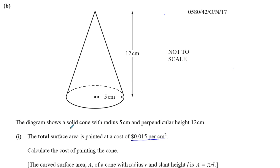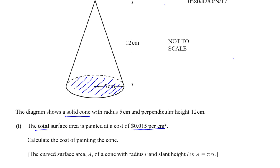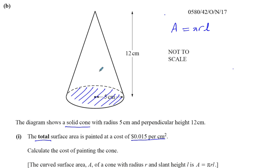It's a solid cone, and it says the total surface area. So if it's solid, that means it has a base. There's going to be something here to paint, and there's a clue where it says the total in bold. The question tells us A equals pi RL. They're talking about the curved surface area, the area of the curved part of the cone, not the flat part which is the base.